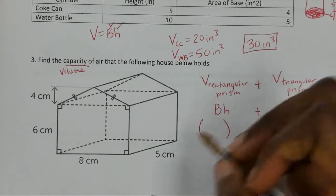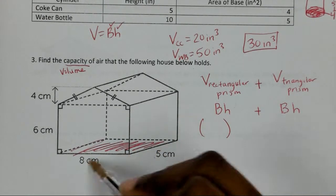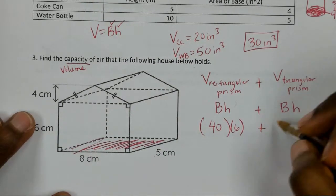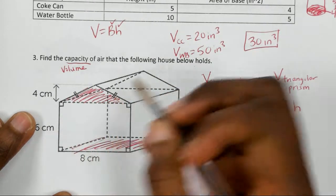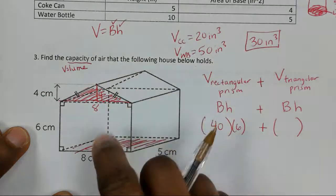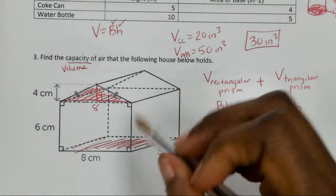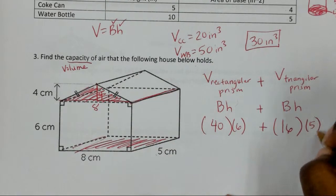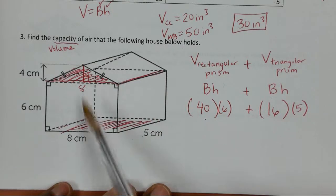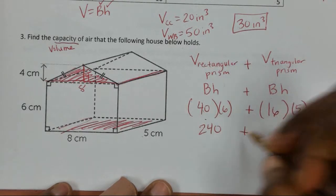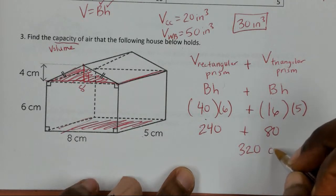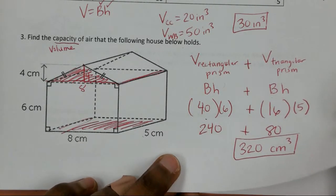For the rectangle, the base area is 8 times 5, which is 40, and the height of the prism is 6, giving 40 times 6 equals 240. For the triangle, the area is one-half times base 8 times height 4, so half of 32 is 16. Times the prism height of 5 gives 80. Adding them: 240 plus 80 equals 320 for the total capacity of the house.